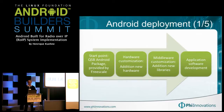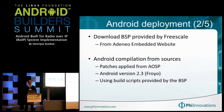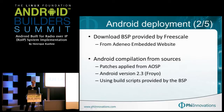There are four steps to Android deployment: the Android build system, the hardware arrangement, the media customization, and the application software. For the first step you have to download the BSP provided by Freescale. Freescale's embedded website is where you can get the BSP; it will automate all the process for the Freescale board.